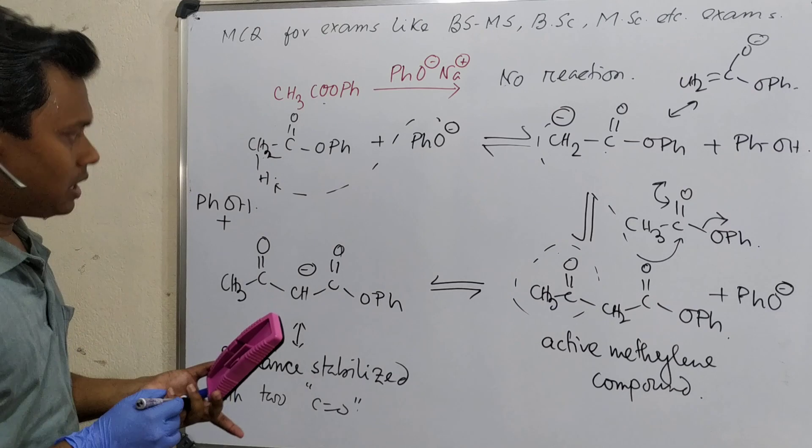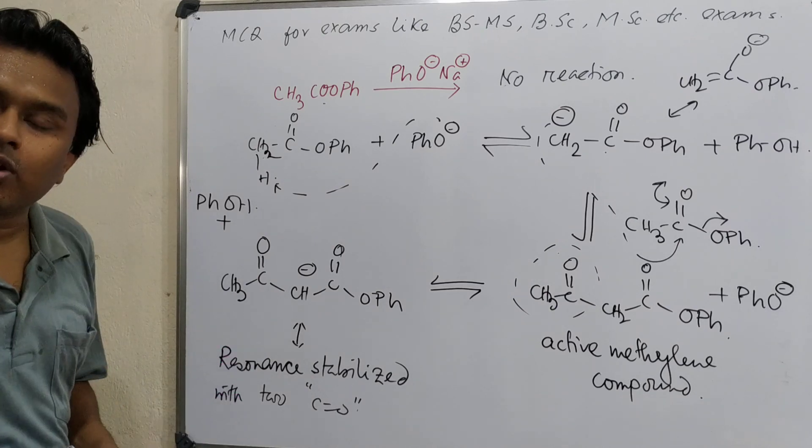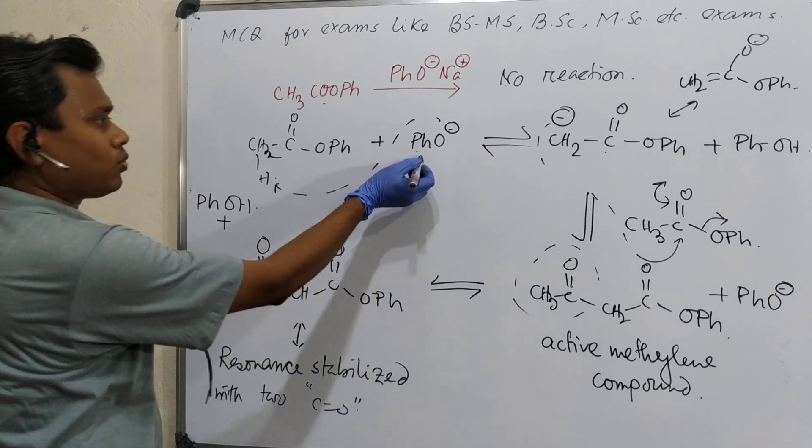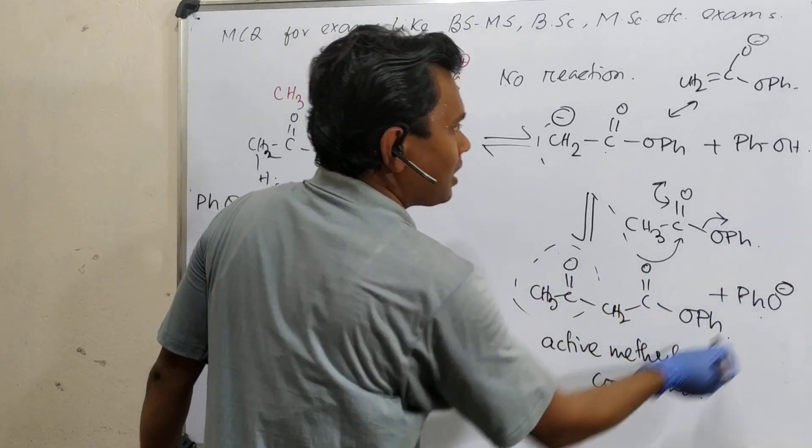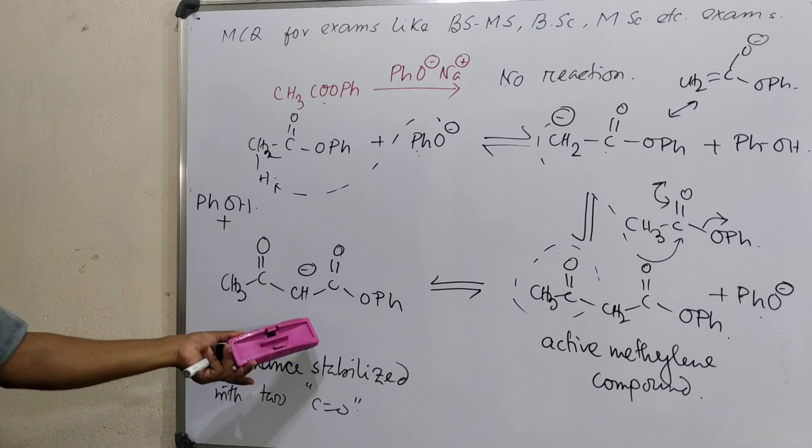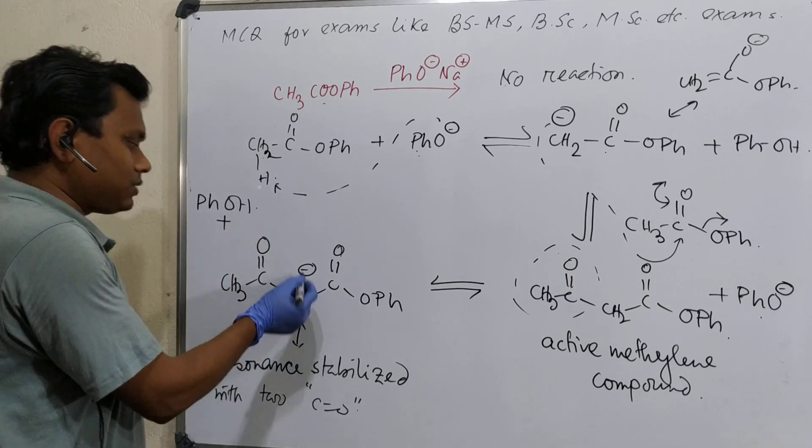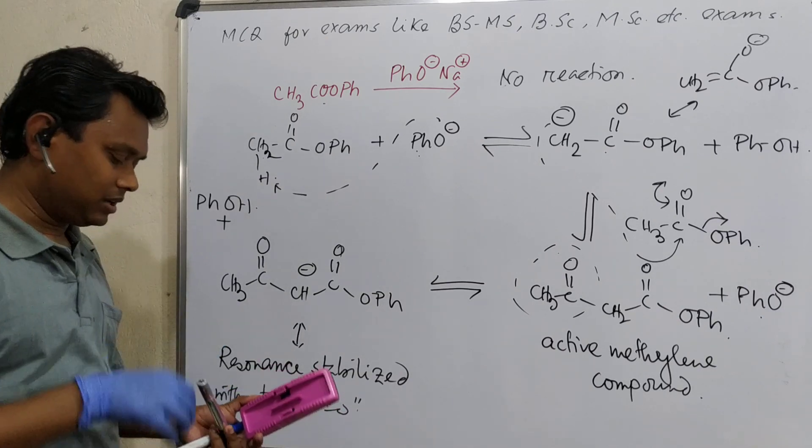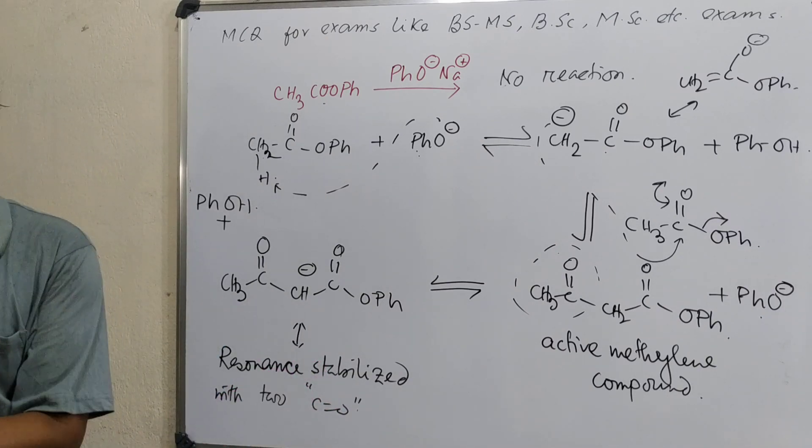Another thing. There is another step in Claisen condensation. This is an active methylene compound. And we know that this methylene group is sufficiently acidic. What happened in Claisen condensation? That should be CHOOPH minus, and this minus charge is resonance stabilized with two carbonyls. Along with that, here also phenol is produced.